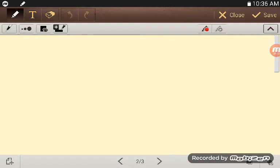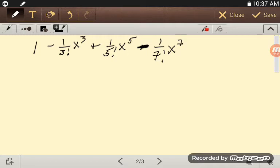This is going to be x minus 1 over 3 factorial x cubed plus 1 over 5 factorial x to the 5th, minus 1 over 7 factorial x to the 7th, and it goes on like that, and that is the sine of x.